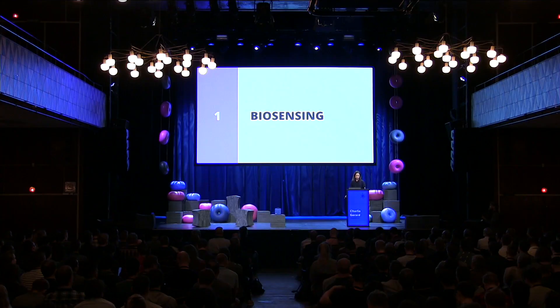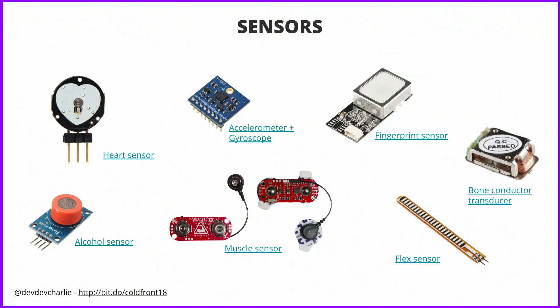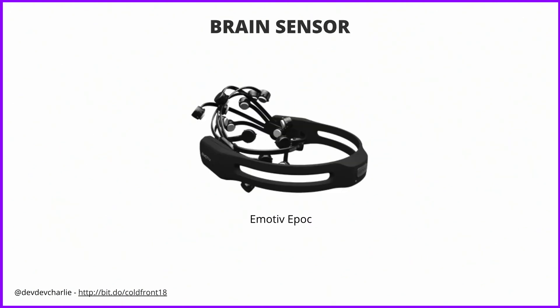So let's start by talking about biosensing. What is it? It is the use of sensors to monitor the activity of physiological functions. You can have different types of sensors — heart sensors, fingerprint sensors, muscle sensors, and probably even more than that. You can buy these sensors online and make your own little device that you can then control in JavaScript, or you can buy devices that are pre-built. The one I'm going to talk more about today is this brain sensor, called an Emotive Epoch.